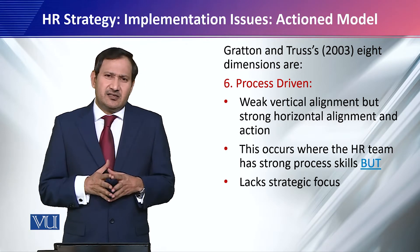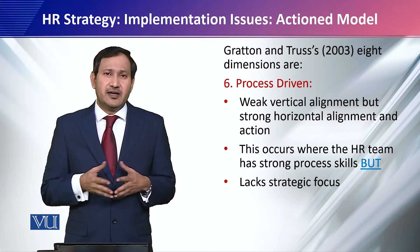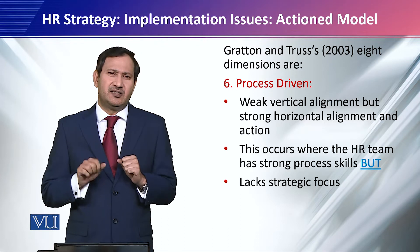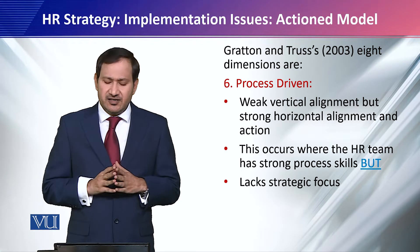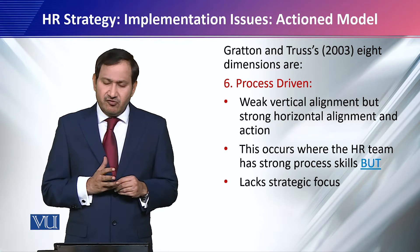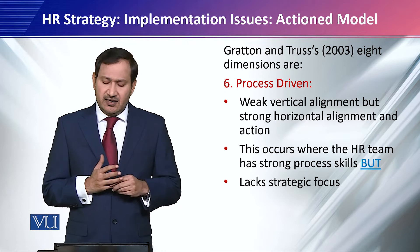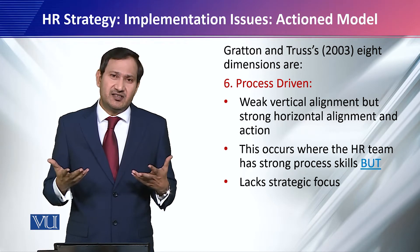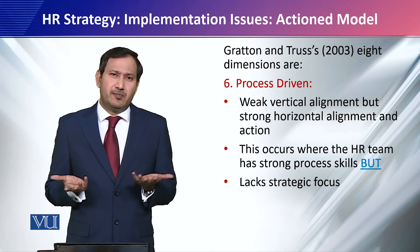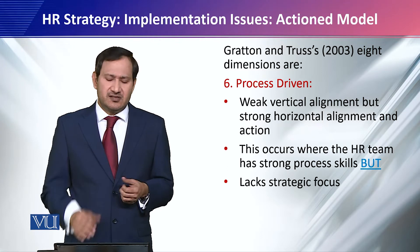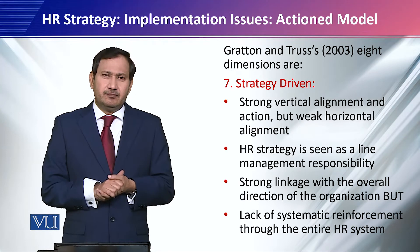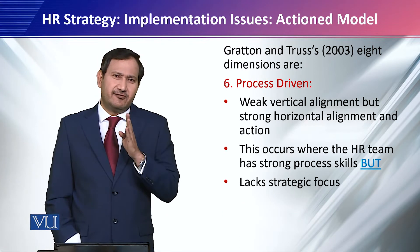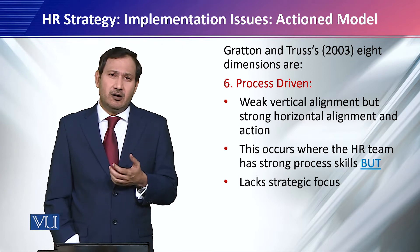The second type of HR strategy that can result from any process of HR strategy making — remember, we are focusing on HR strategy, not business, competitive, or corporate strategy — is process driven. This features weak vertical alignment but strong horizontal alignment and action. This occurs where the HR team has strong process skills, as the name suggests. HR is very competent in the process of developing a strategy but lacks a strategic focus. When implementing that strategy, you will feel that the strategic focus is not given due consideration.